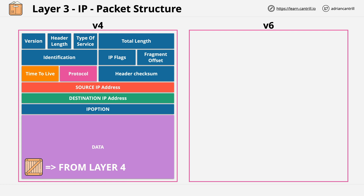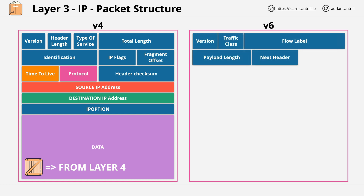One for every layer 2 network or layer 2 point-to-point link which it moves through. IP version 6, from a packet structure perspective, is very similar. We also have some fields which matter less at this stage — they are functional, but to understand things at this level, it's not essential to talk about these particular fields.